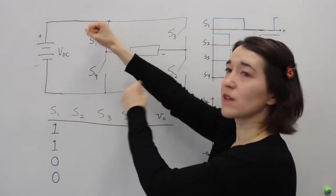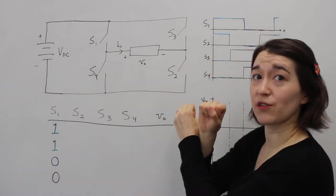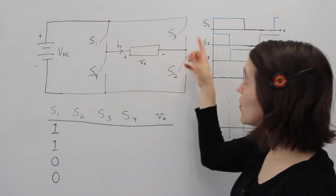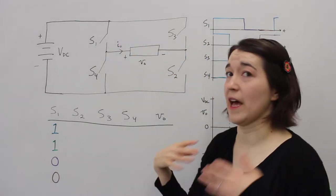So we're going to run these switches complementary and the same is true for these two. They're also going to be complementary. We can have two different states for these two and two different states for these two, which means that there's four total combinations that are valid.